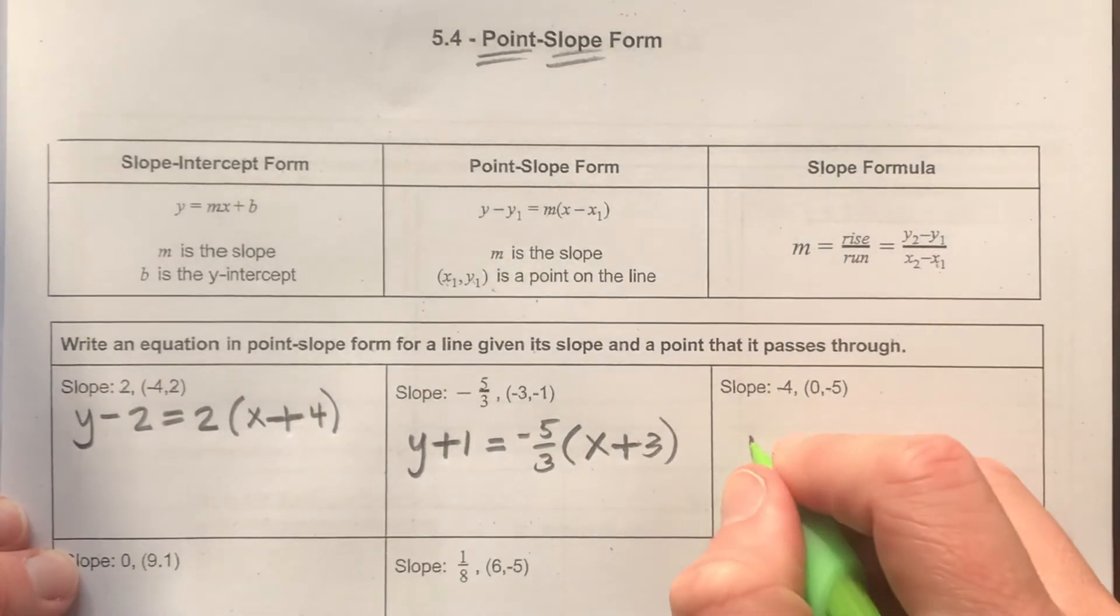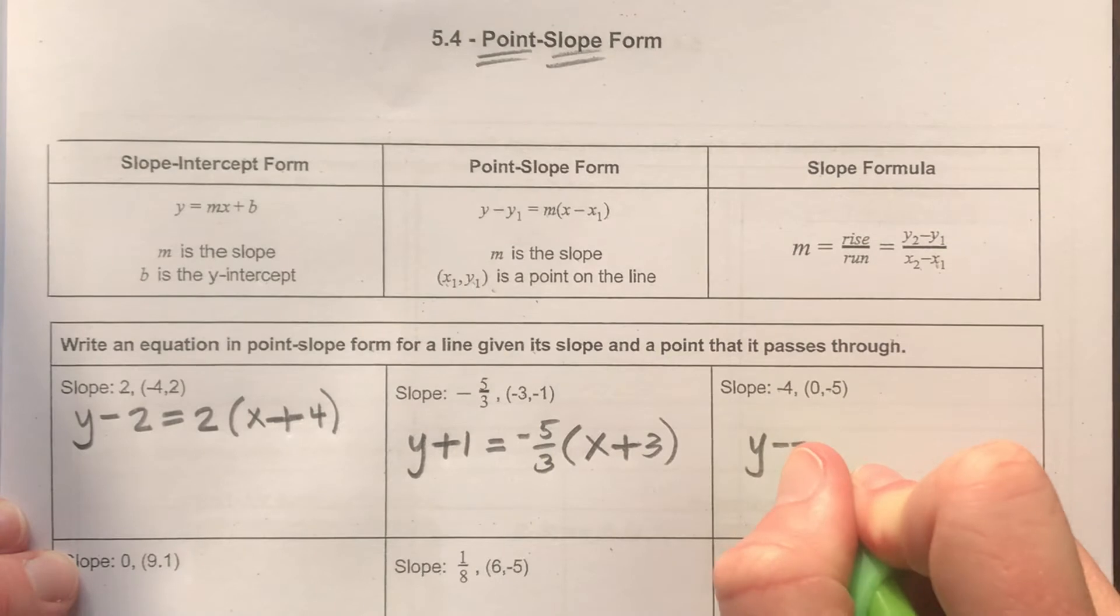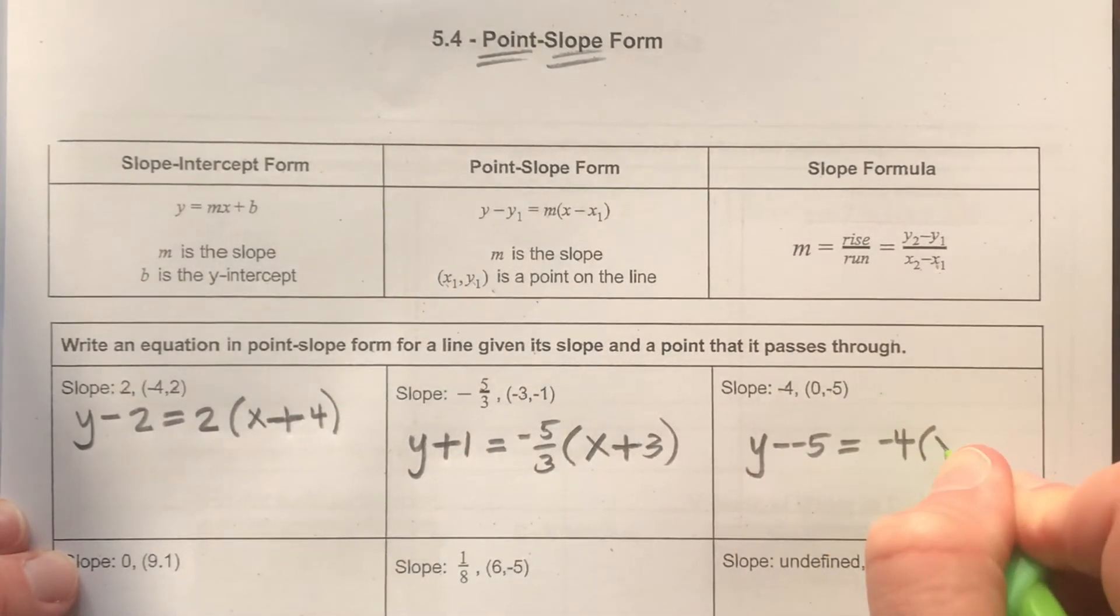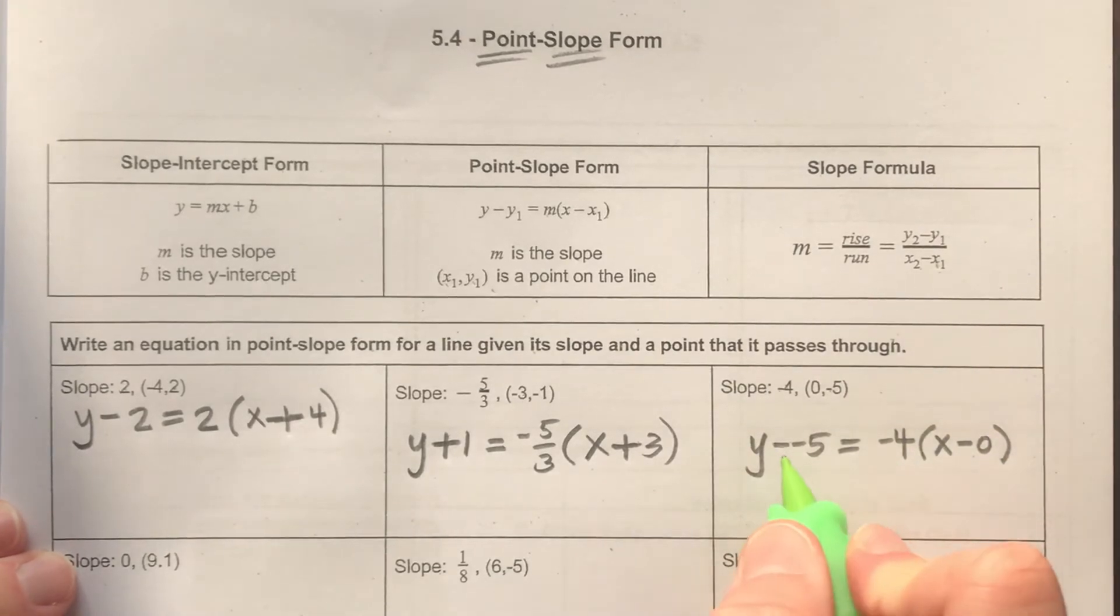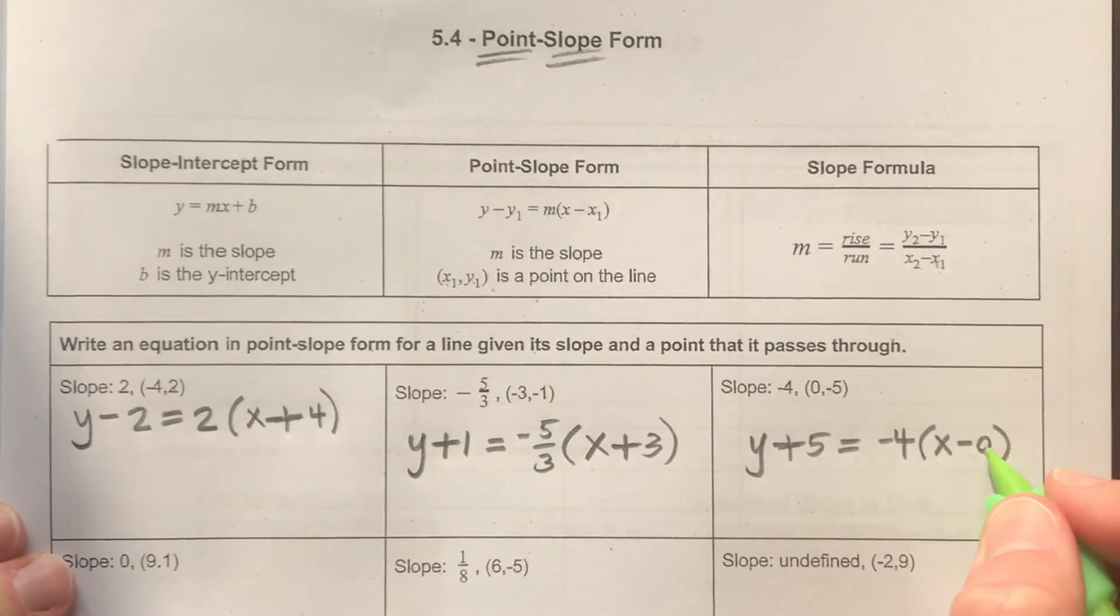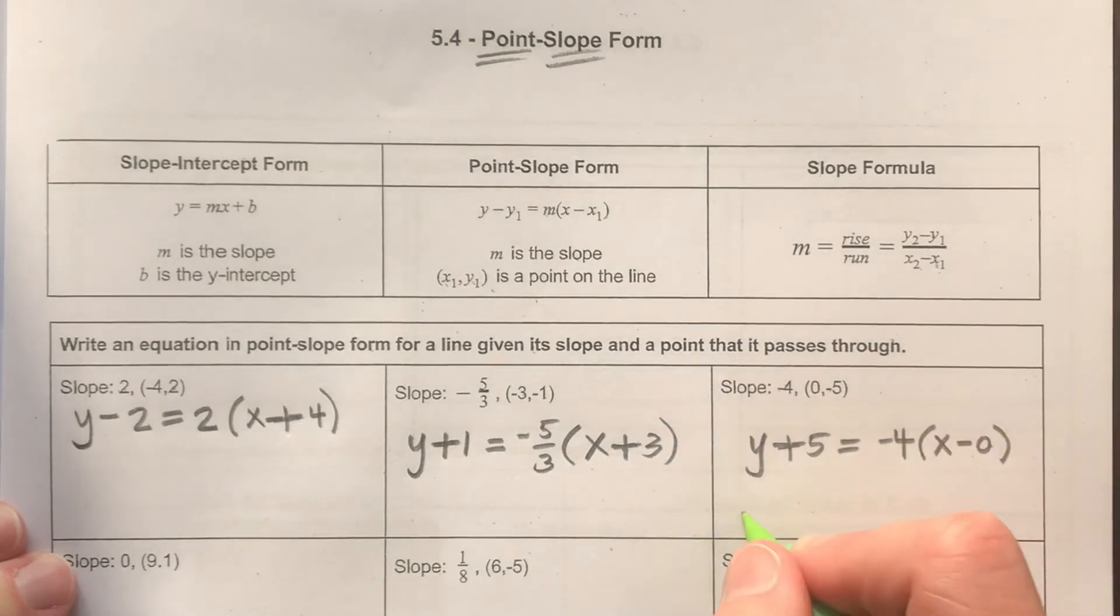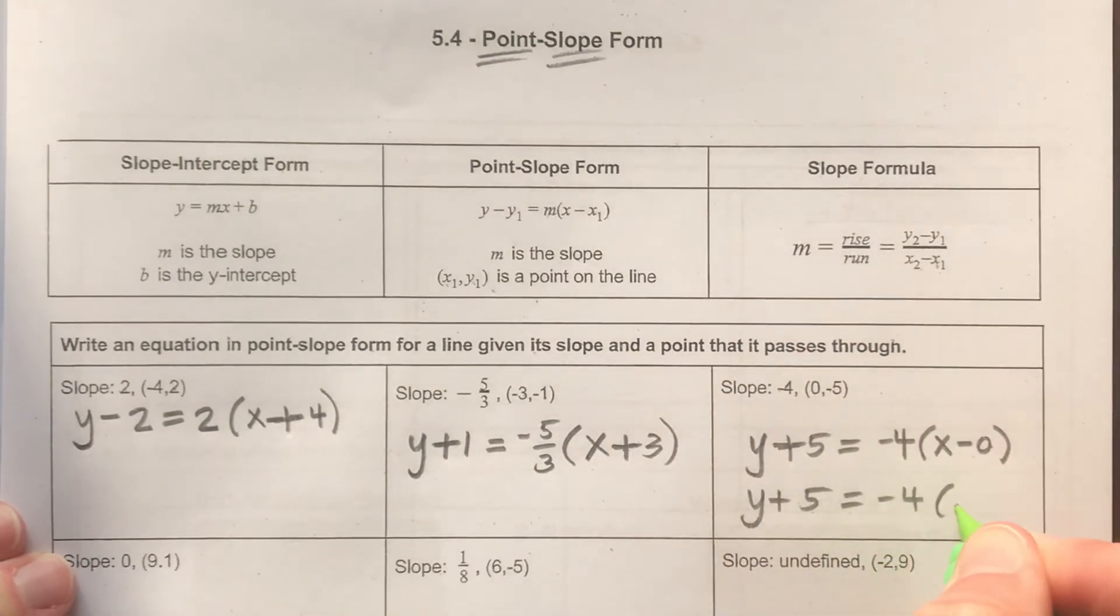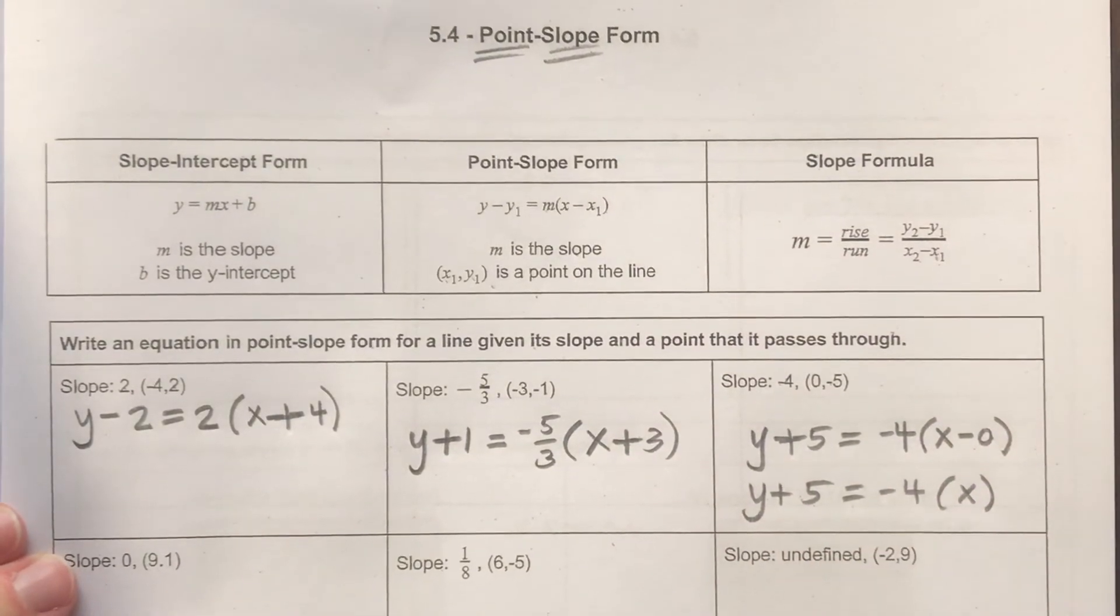So I have another one here, y minus negative 5 is equal to our slope of negative 4, and then in parentheses, x minus 0. So the only thing I would need to do here, again, simplify minus a negative is the same thing as adding. And then I actually can simplify just a little bit more because if I'm going to take x minus nothing, I could also say that this equation would work as well because I don't need to subtract nothing. So either of those would be perfectly acceptable.